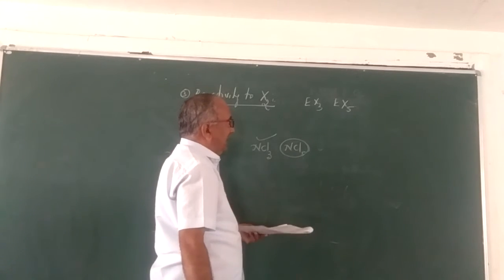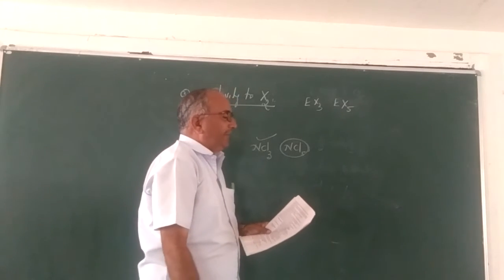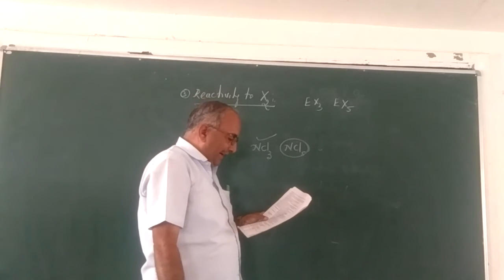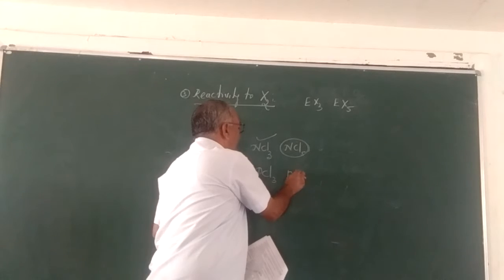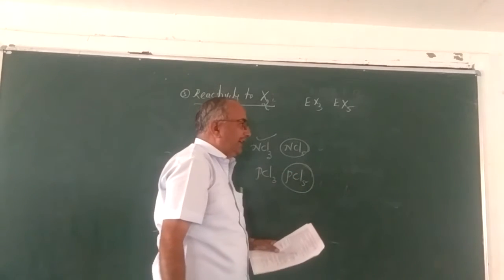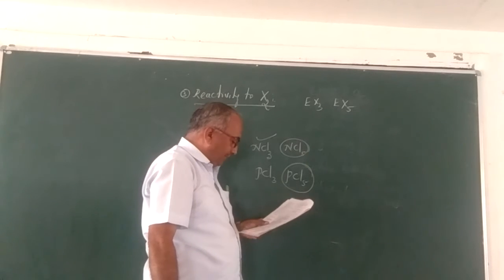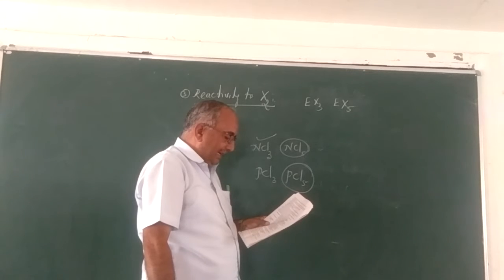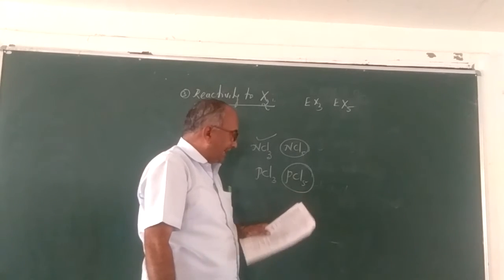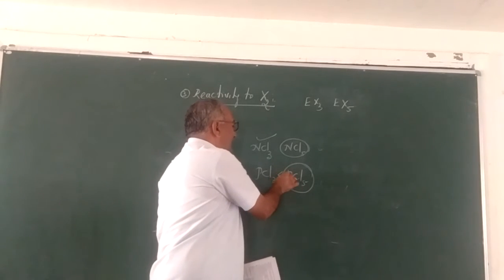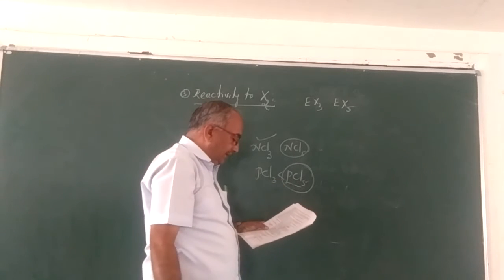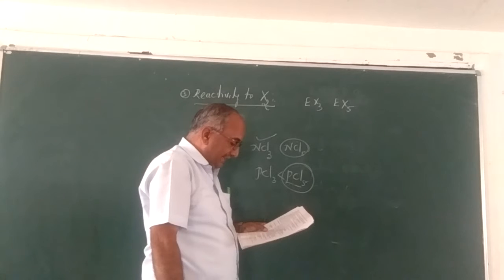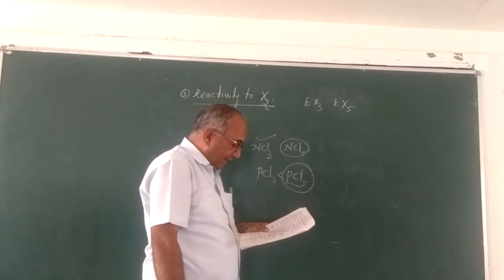The other 15 group elements, except nitrogen, form both trihalides and pentahalides. The pentahalides are more covalent than the trihalides. For example, phosphorus pentachloride is more covalent in nature than phosphorus trichloride. This is because the higher the positive oxidation state of the central atom, the greater the polarizing power, which increases covalent character.